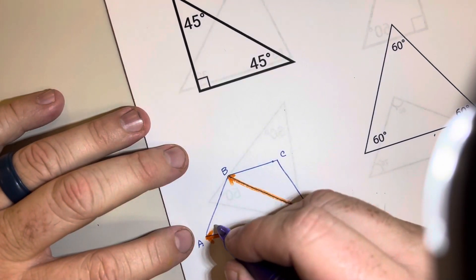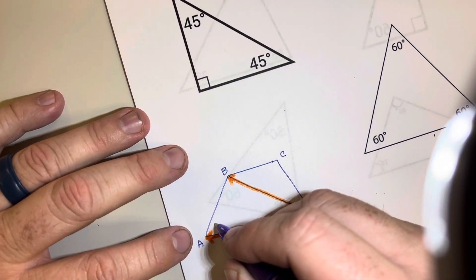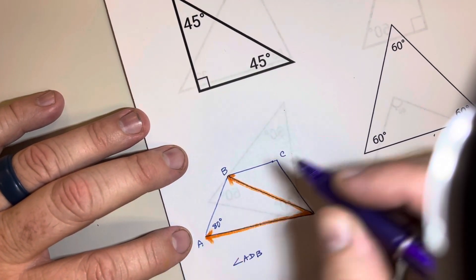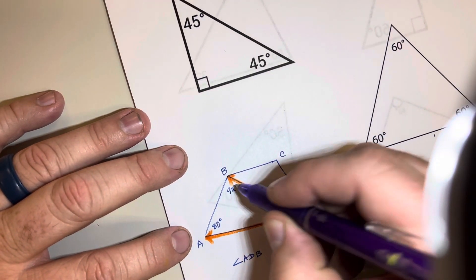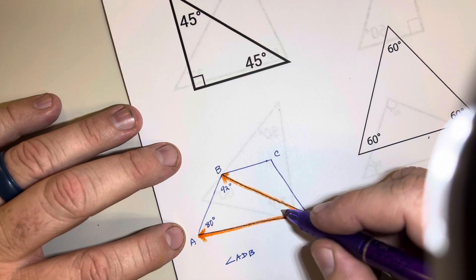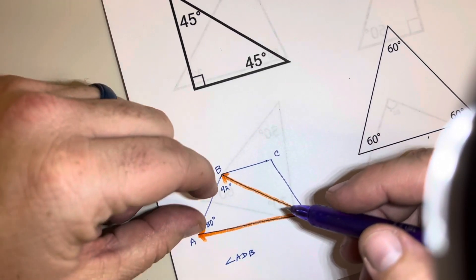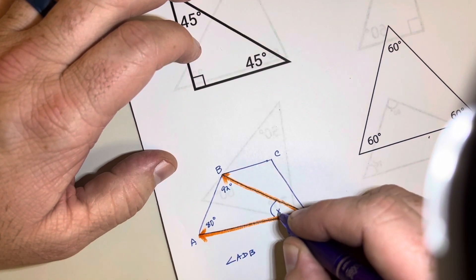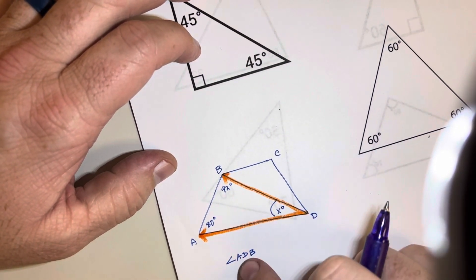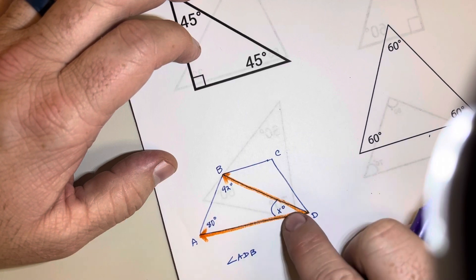If we knew that this angle over here was, I'm just going to make this up, 80, and we knew that this angle over here was 92, we could figure out this missing angle right here. Because we would add these two together and then subtract from 180, and that would tell us this missing angle right over here, which is angle D or angle ADB. So we could find that missing amount.